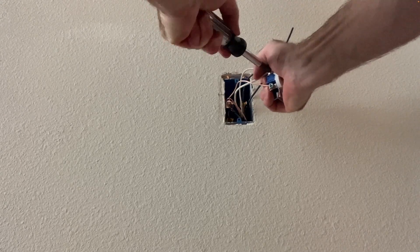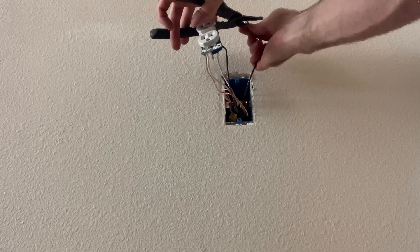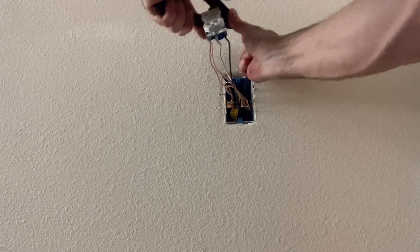I hope this makes sense—this existing outlet you can see is what's providing power to our new outlet that we just installed on the other side of the wall.